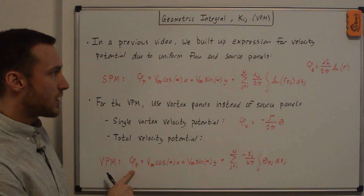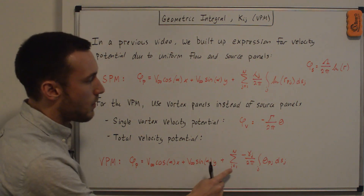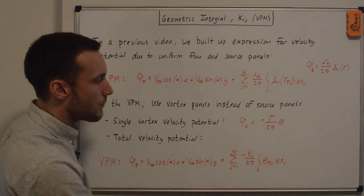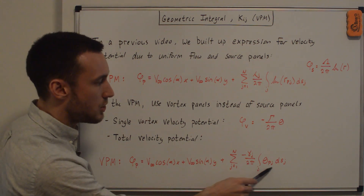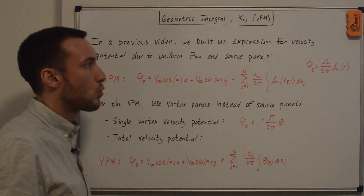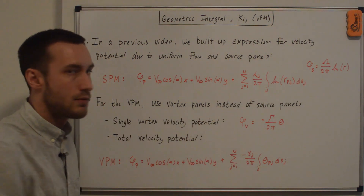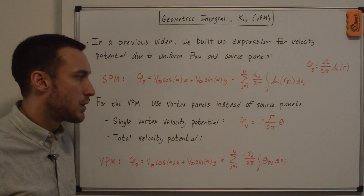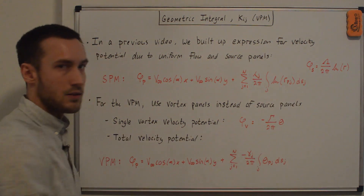The velocity potential induced at point p equals the uniform flow term, and now instead we have negative lowercase gamma_j over 2 pi times the integral over the jth panel of theta_pj dsj, where theta_pj mimics the r_pj term from the source method. Capital letters denote the source strength or vortex strength — capital Lambda for source, capital Gamma for vortex — while lowercase letters are the strength per unit length, and we integrate over the panel length to remove the per-length dependency.